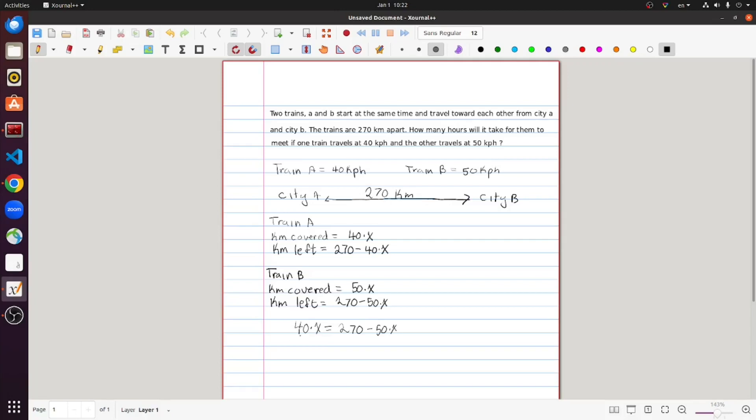Solving this is pretty easy. We have 90x, we bring the 50 to the other side, is equal to 270, so x is equal to 270 divided by 90, so x is equal to 3.